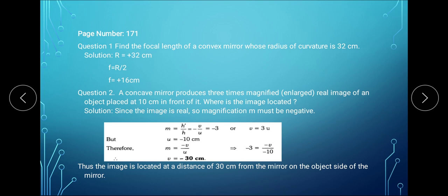And as the object is located at 10 cm in front of the mirror, your U will be minus 10. Now the value of M is given to you, U is given to you, you can easily find V using the formula M is equal to minus V by U. Substitute the value of magnification as well as U, you will get your V, that is minus 30 cm.